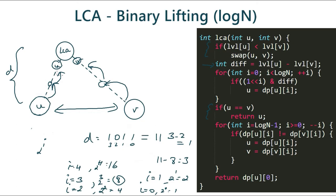So finally U and V land at this position — they are immediate children of the LCA. Basically, we always try to jump by the highest amount such that after jumping, U and V are not equal, and we keep doing this until i becomes 0. After all the jumps, U and V are immediate children of the LCA, because even a jump of distance 1 would make them equal. In the code, we iterate i from the highest value down to 0; if the ancestors of U and V at distance 2^i are not equal, we move U and V to those ancestors. After the loop, the parent of either U or V is the LCA, so we return DP[U][0].